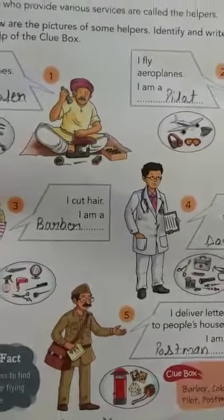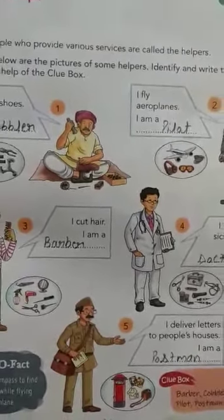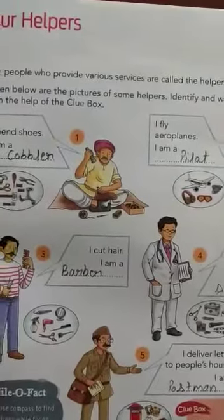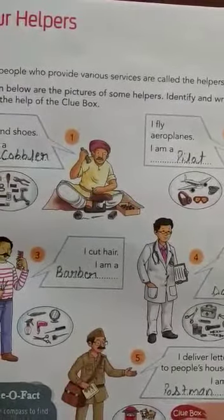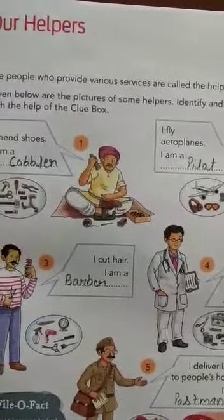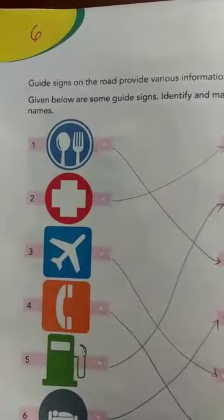Write their names and complete it in your book. Exercise number 5 — Our Helpers — is complete.